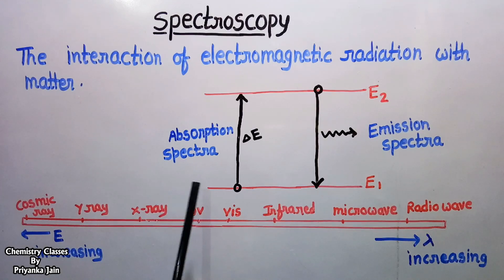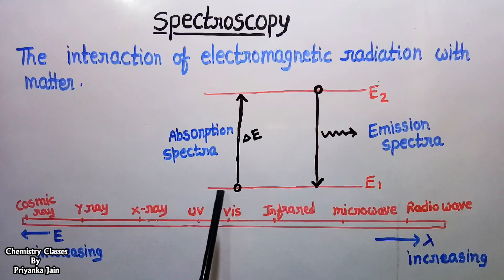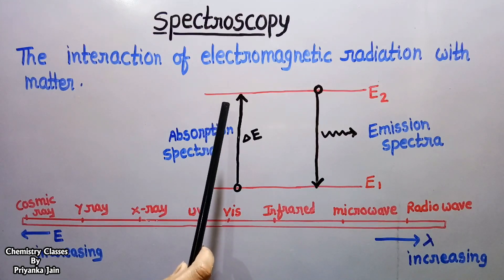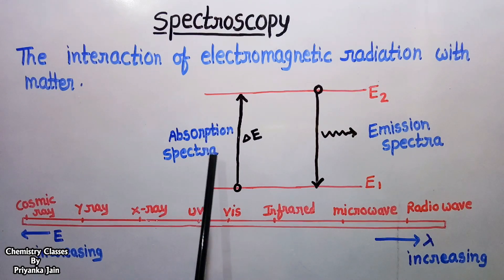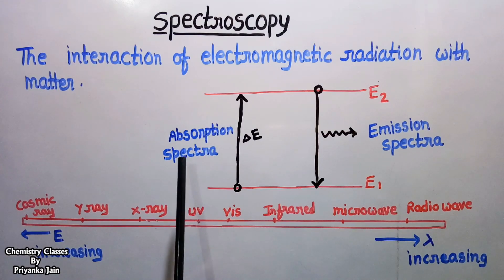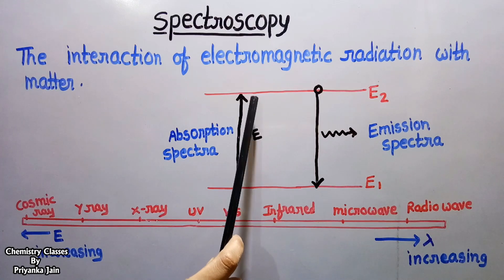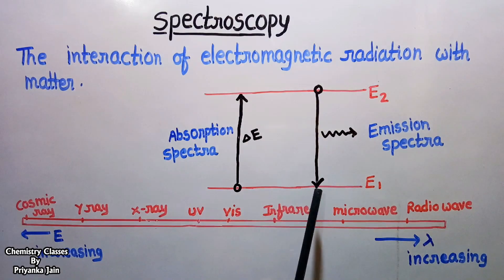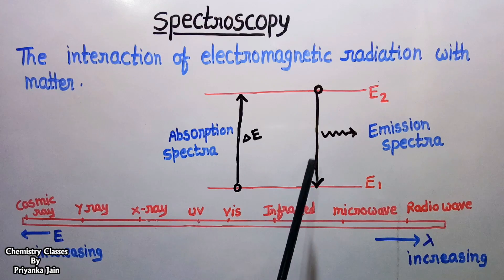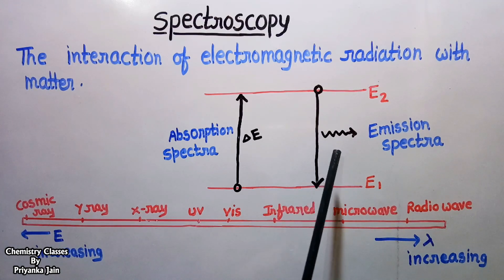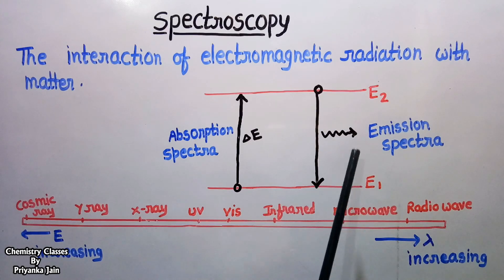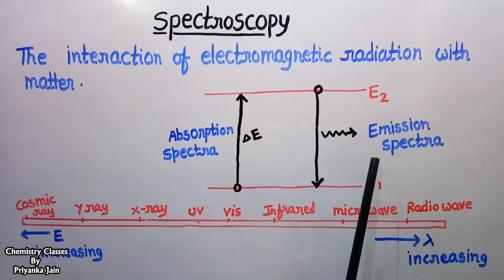When electromagnetic radiation of a certain frequency falls on a metal surface, an electron at a certain energy level absorbs the energy and jumps to a higher energy level. As a result, we get an absorption spectra, and this type of spectroscopy is known as absorption spectroscopy. The electron remains in this excited state for a certain interval, then returns to its original state and radiates the energy. We then get emission spectra, and this type is known as emission spectroscopy.